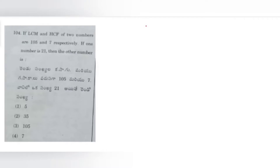Hi everyone, let us continue the remaining solutions of TS state paper 2 in this video. Let us come to question number 104. If LCM and HCF of two numbers are 105 and 7 respectively, and if one of the numbers is 21, then the other number is?